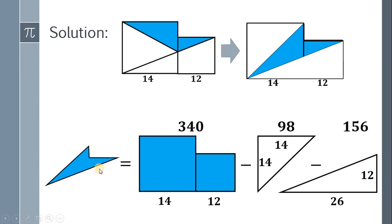Therefore, the area of the shaded region must be 340 minus 98 minus 156, which gives us 86. And don't forget the unit: square centimeters. And we're done.